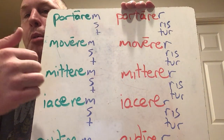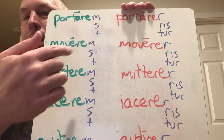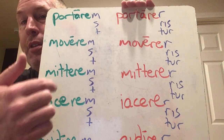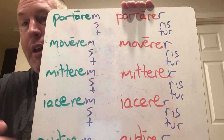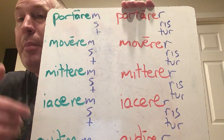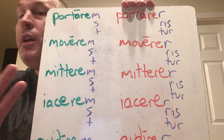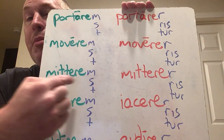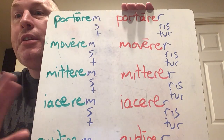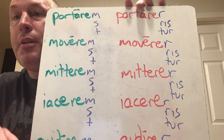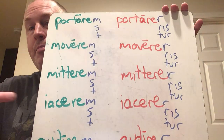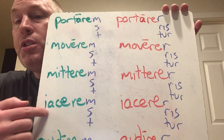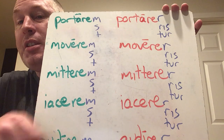Movere — moverem, moveres, moveret, and on and on. Mittere — mitterem, mitteres, mitteret, mitterimus, mitteretis, mitterent. There's no U there — it all just keeps the infinitive as the stem the whole time through. Even the subjunctives are more regular than the present tense indicative.